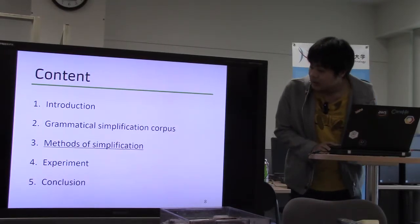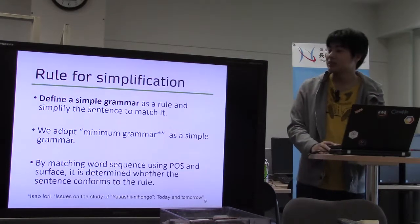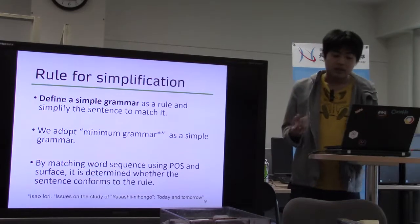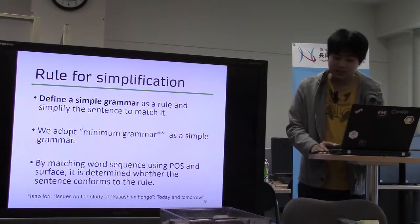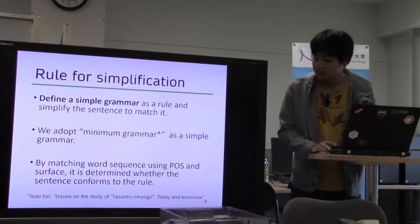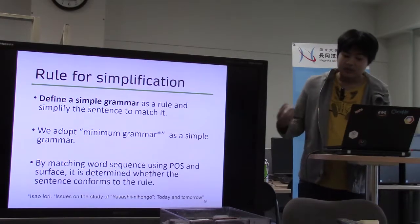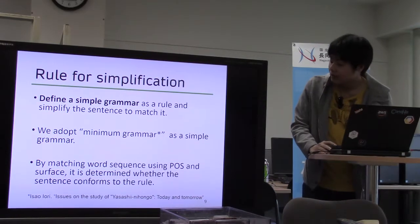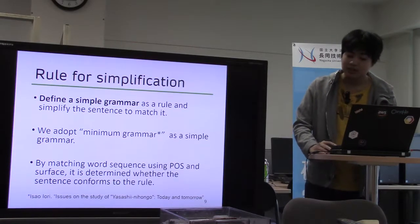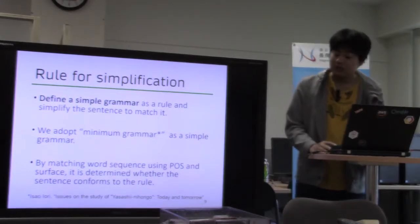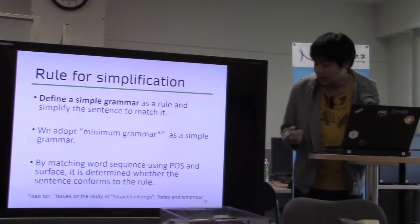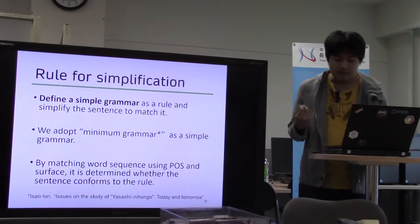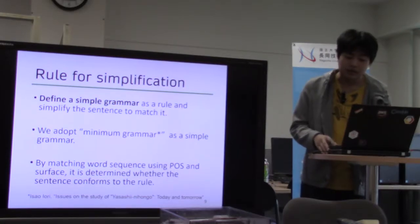Next is the method of simplification. For grammatical simplification, we defined simple grammar. If a sentence contains only simple grammar, the sentence is treated as simple, and the sentence is paraphrased to follow simple grammar. We adopt minimum grammar as the simple grammar. Minimum grammar is proposed in Japanese linguistics research. By matching word sequences using both part of speech and word surface, it is determined whether the sentence conforms to the rule.